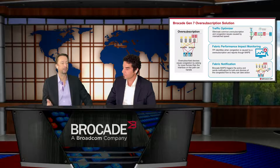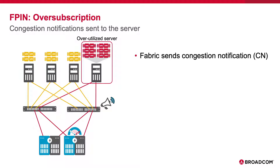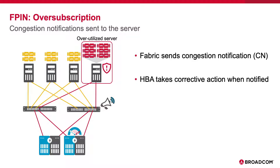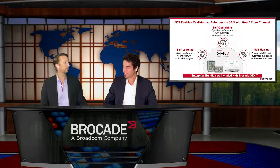Does the over-subscription condition have any implications around FPIN — the fabric performance impact notification? What FPIN does here is tell the device — for example, the server — that it's creating congestion on the network. The HBA can then throttle back how fast it releases buffers up to the logical volume manager in the operating system, or put a limit on how many outstanding I/Os that server puts out on the fabric. If it knows it cannot receive data that fast, it doesn't make sense to ask the storage array to send data before it's actually able to receive it.